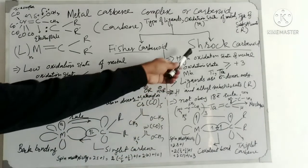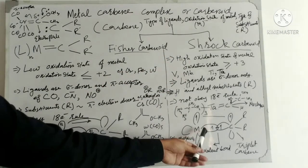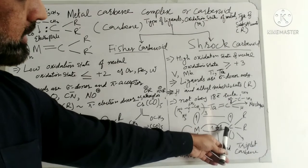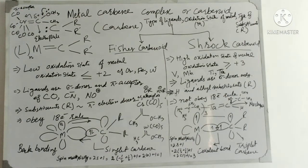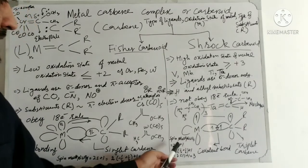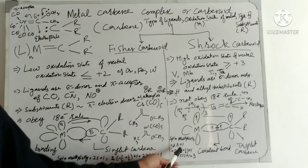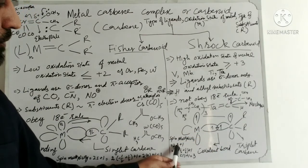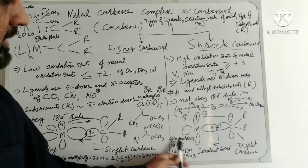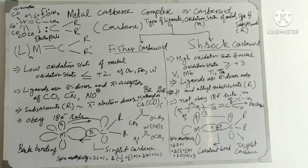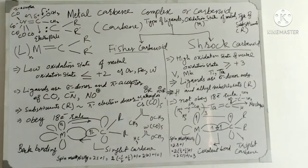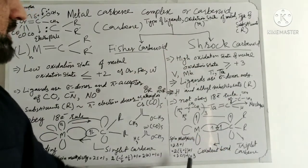Now, in the case of Schrock Carbenoid, the carbene valence electrons occur in the triplet state — both valence electrons have parallel spin. Using the formula 2S + 1, both electrons have parallel spin, so each contributes positive one-half, giving S = 1, and the spin multiplicity comes out to 3. That is why we call it triplet carbene — because this carbene is triplet with unpaired electrons. In Schrock Carbenoid, the carbene is triplet with spin multiplicity of 3.